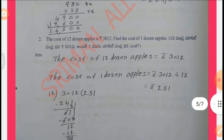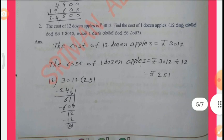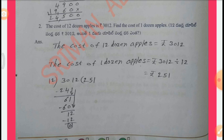Cost of 12 dozen apples is Rs. 3,012. Find the cost of one dozen apples. Solution: The cost of 12 dozen apples = Rs. 3,012. Cost of one dozen apples = Rs. 3,012 divided by 12. By division, we get Rs. 251.